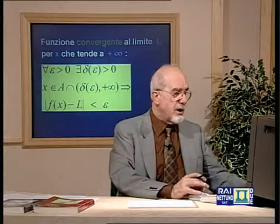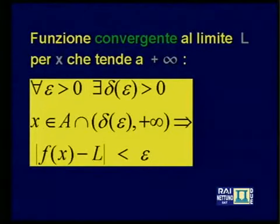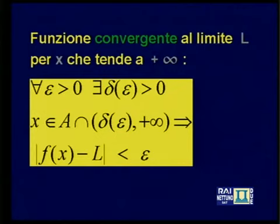Possiamo portarci al monitor dove troviamo scritto in bella forma quello già detto: dire che la funzione converge al limite L quando x tende a +∞ — sempre che ciò abbia senso, quindi che l'insieme di definizione lo consenta — vuol dire che per ogni epsilon > 0 esiste un delta(epsilon) > 0 tale che per tutti gli x di A maggiori di delta(epsilon), |f(x) - L| < epsilon.